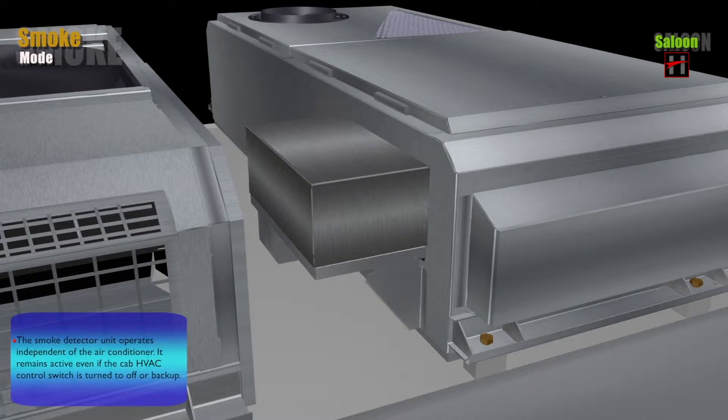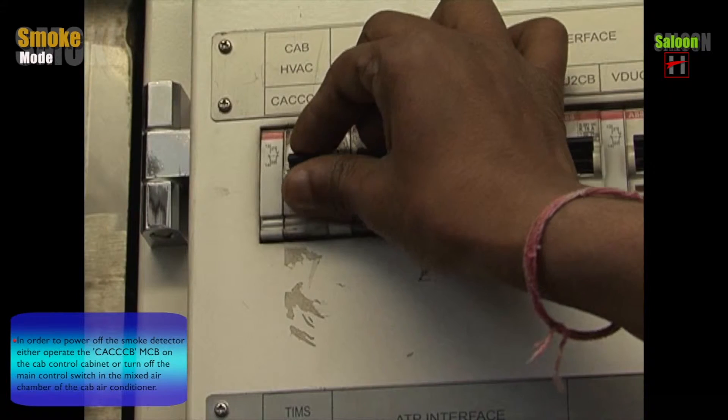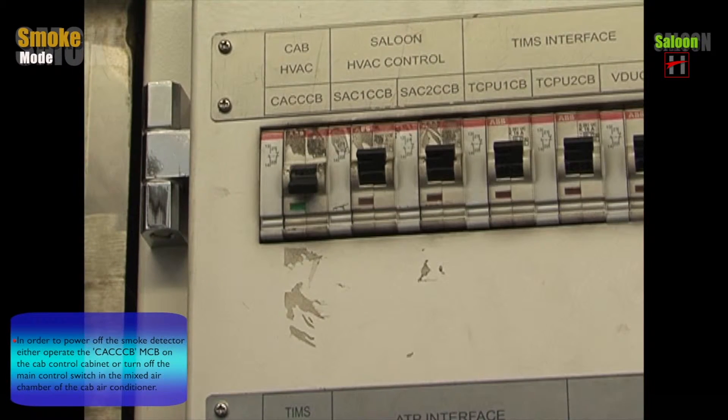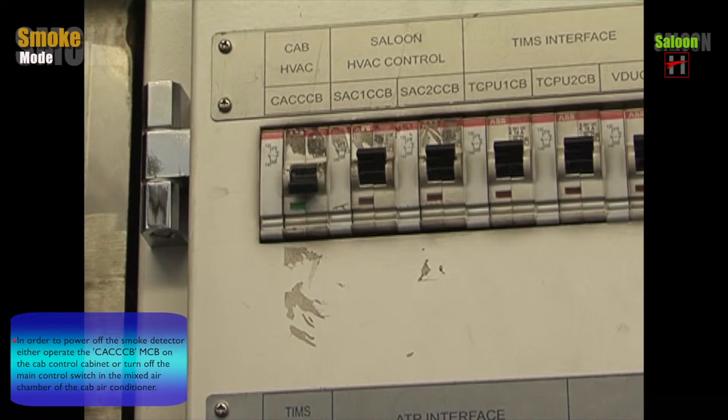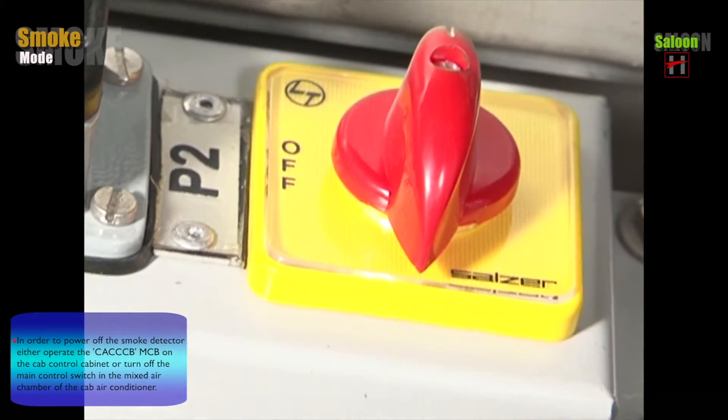The smoke detector unit operates independent of the air conditioner. It remains active even if the cab HVAC control switch is turned to off or backup. In order to power off the smoke detector, either operate the CACCCB-MCB on the cab control cabinet or turn off the main control switch in the mixed air chamber of the cab air conditioner.